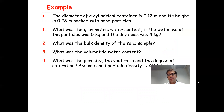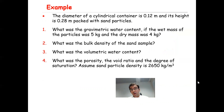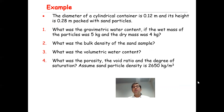Now let's solve an example. The diameter of a cylindrical container is 0.12 meters, and its height is 0.28 meters, packed with sand particles. The question has four parts: what was the gravimetric water content if the wet mass was 5 kilograms and the dry mass was 4 kilograms? What was the bulk density? What is the volumetric water content? And what are the porosity, void ratio, and degree of saturation? Assume sand particle density is 2,650 kg/m³.